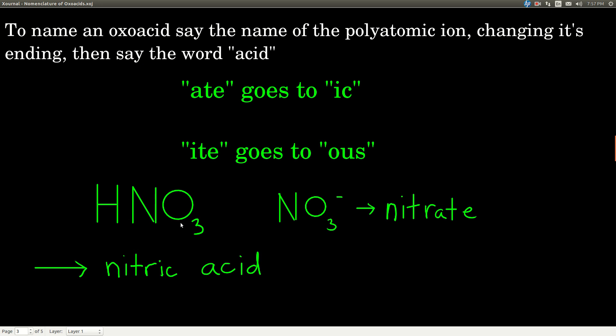NO3, and this, again, this is where it becomes important to recognize polyatomic ions. This is one of those polyatomic ions in that chart I showed you. And it's NO3 with a negative 1 charge. And its name is nitrate.